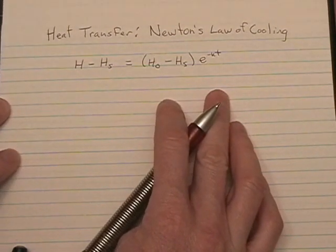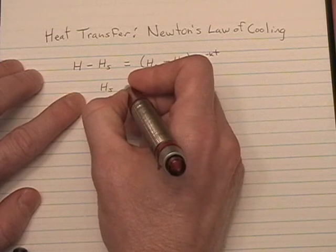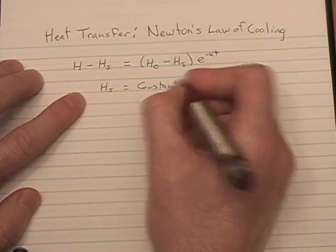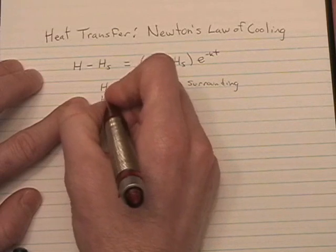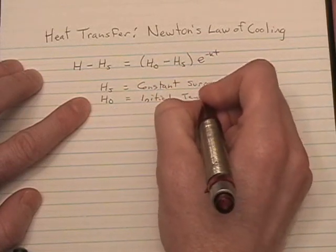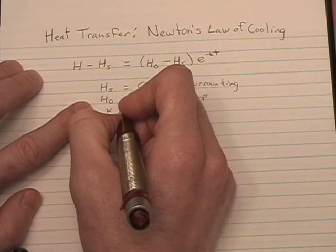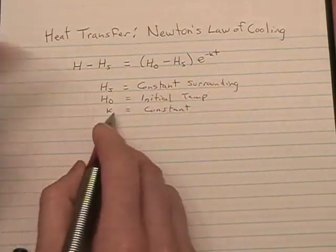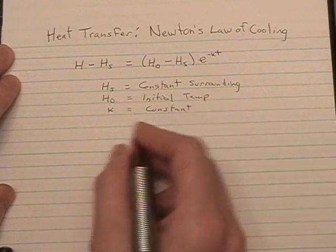I know you've all read the discussion, but let me point out some key features of this equation. h sub s is a constant representing the surrounding temperature. h sub zero is your initial temperature. And k is a constant of proportionality related to the object that's cooling.